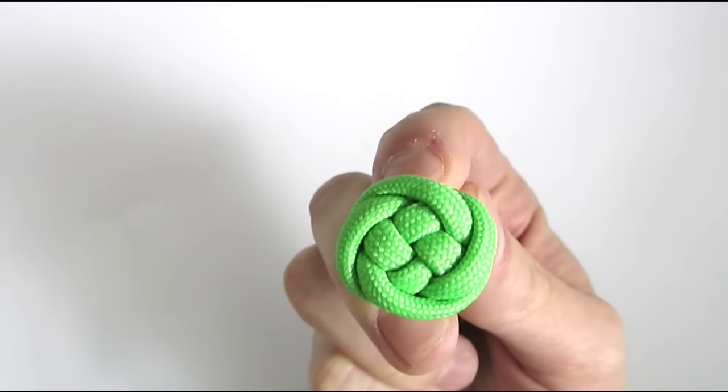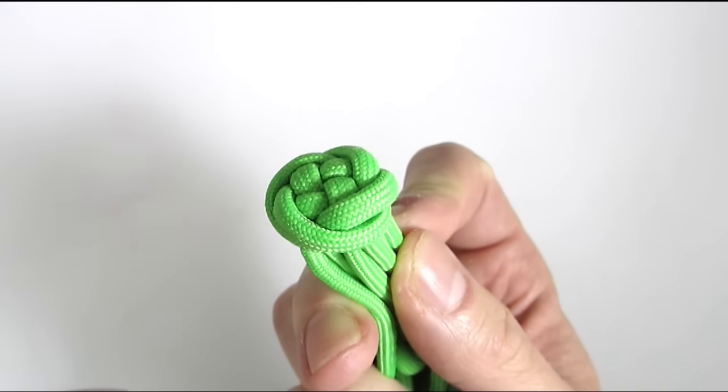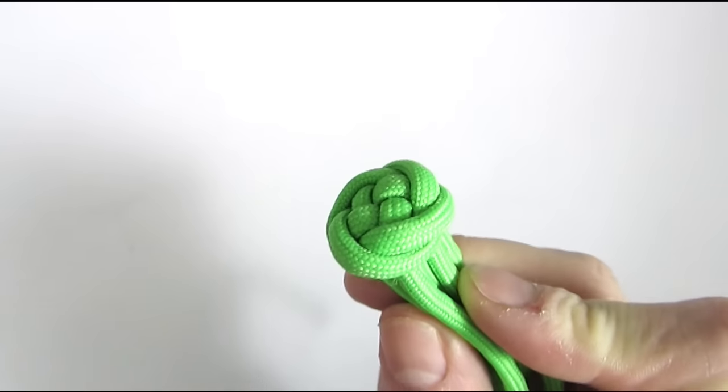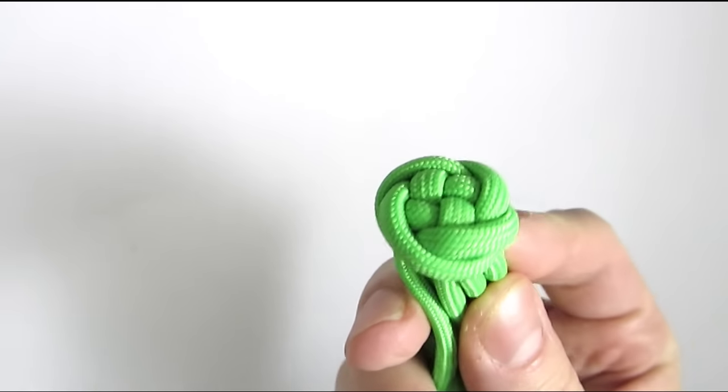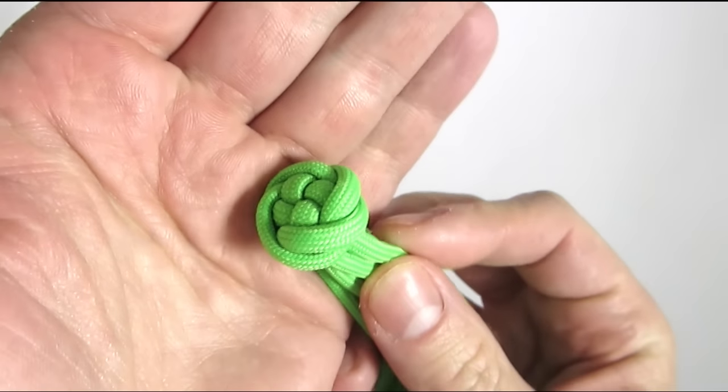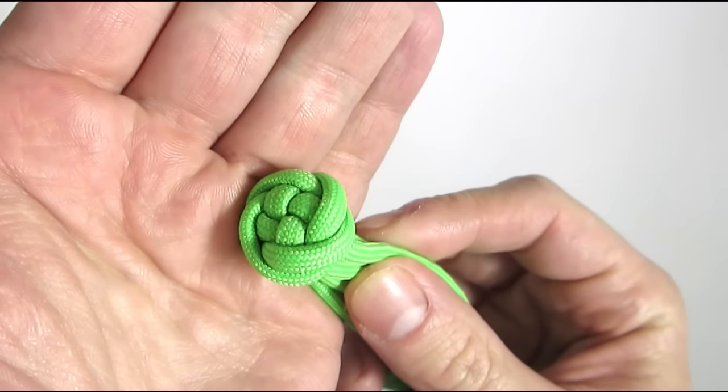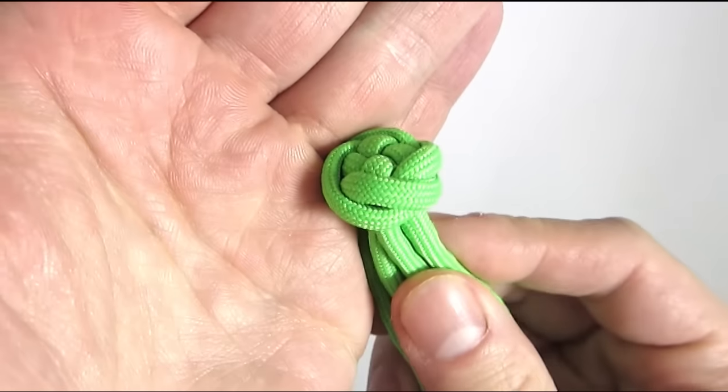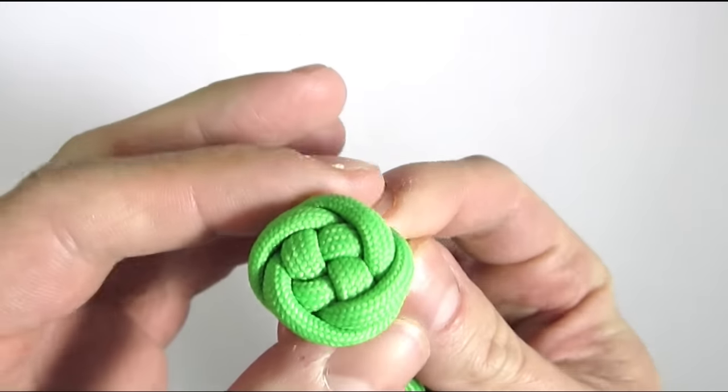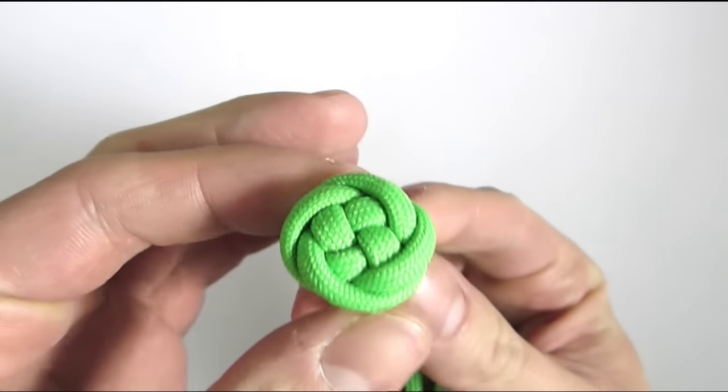So here you can see the blue rose knot. As you can see it does indeed look like a crown knot with a Matthew Walker knot tightened around it. The cords are exiting at the bottom of the knot which is something we're going to have to work in.